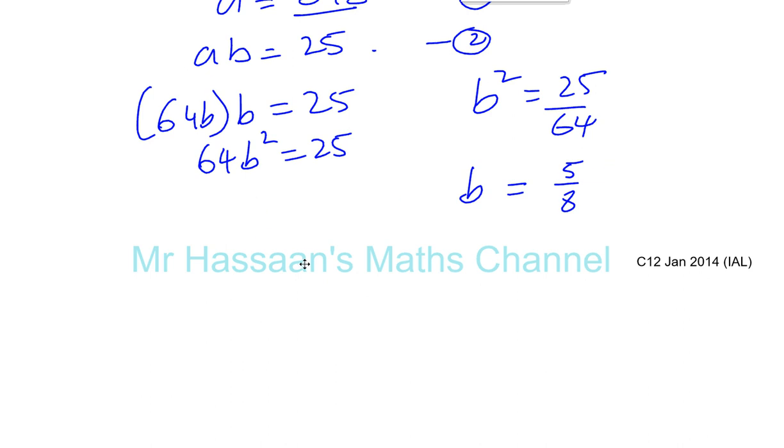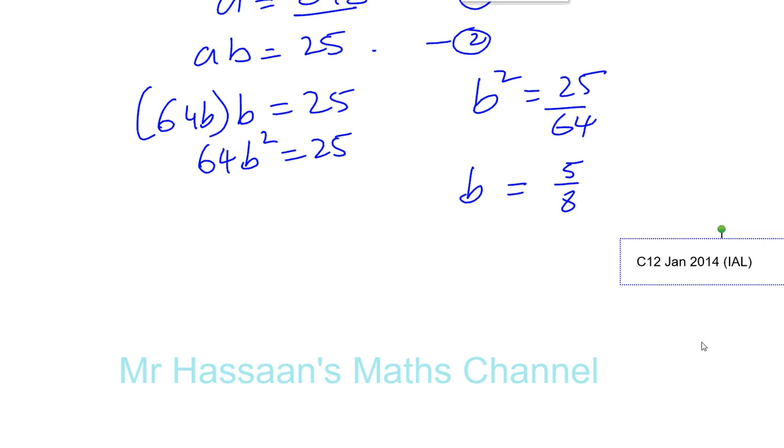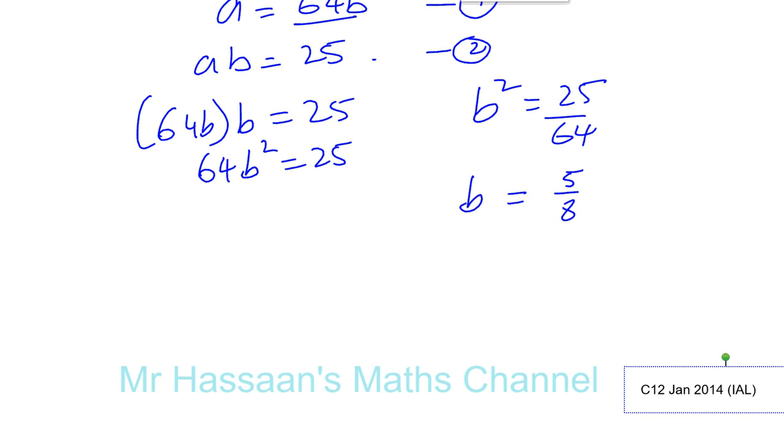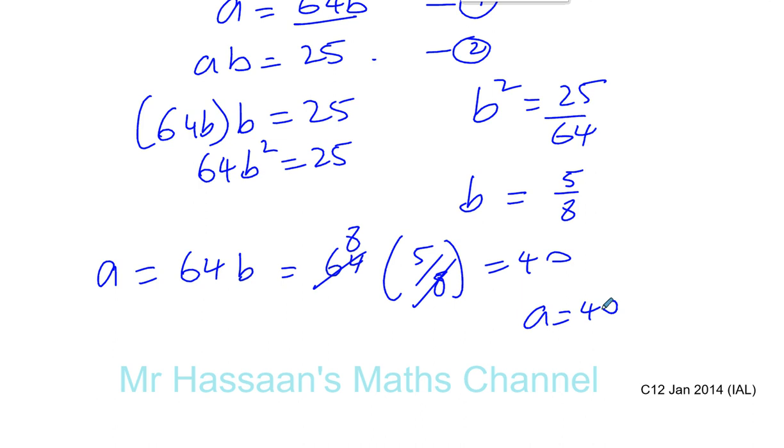And we want to find the value of A. Well, we know that A is equal to 64 times B. So if we know what B is, we can say A is equal to 64 times 5 over 8. 8 goes into 64 eight times, 8 times 5 is 40. So we can say A is equal to 40 and B is equal to 5 eighths. So those are the answers for A and B in this question.